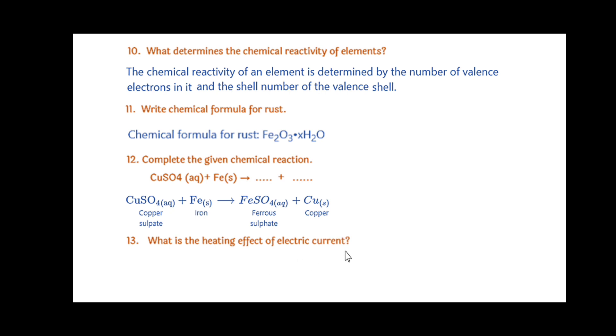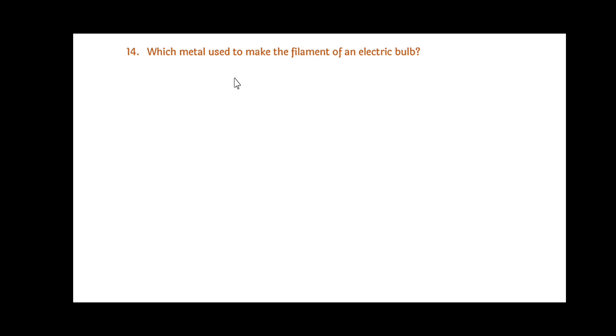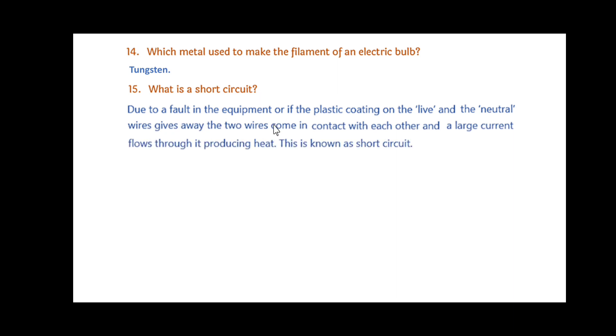What is the heating effect of electric current? When a resistor is connected in an electrical circuit, heat is produced due to the current. This is known as heating effect of electric current. Which metal is used to make the filament of an electric bulb? Tungsten. What is short circuit? Due to a fault in the equipment or the plastic coating on the live and neutral wires gives away, the two wires come in contact with each other and a large current flows through it producing heat. This is known as short circuit.